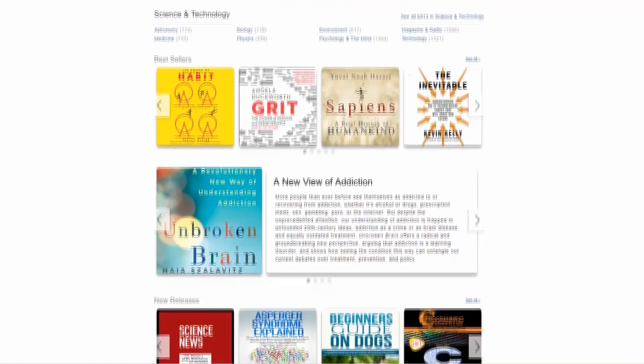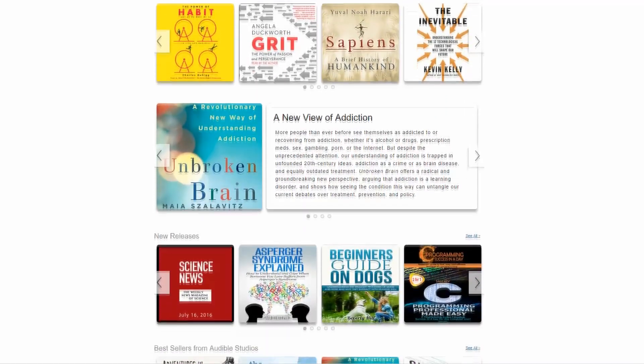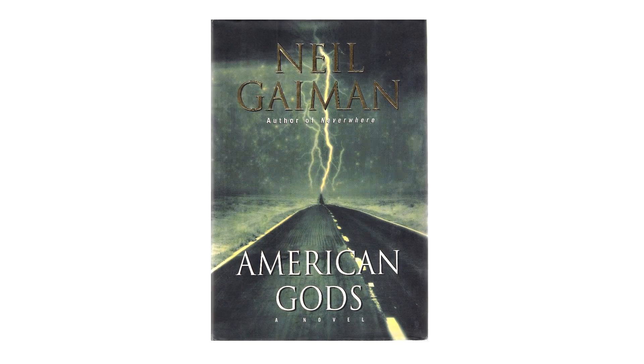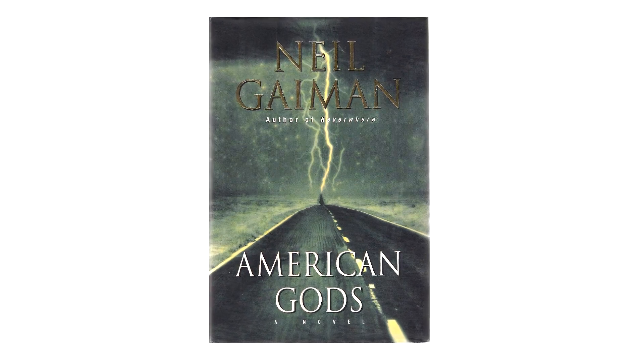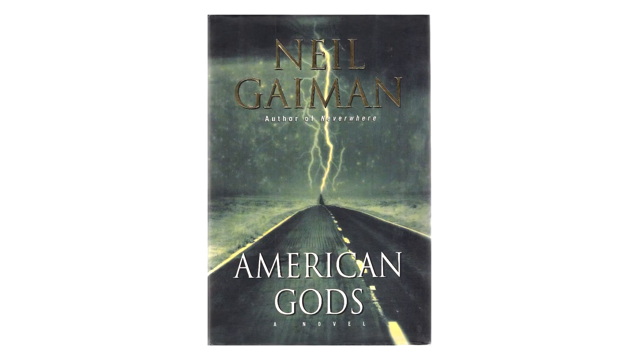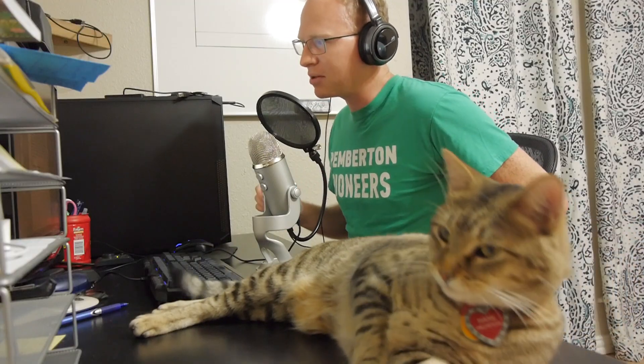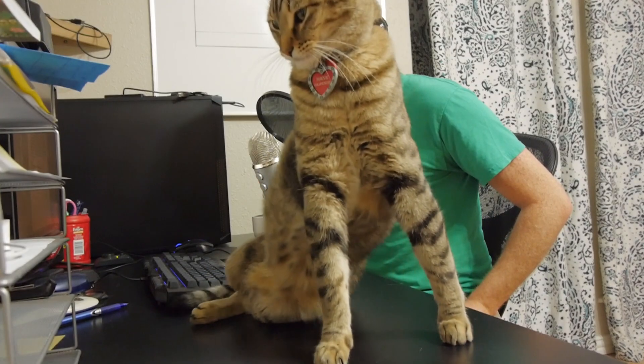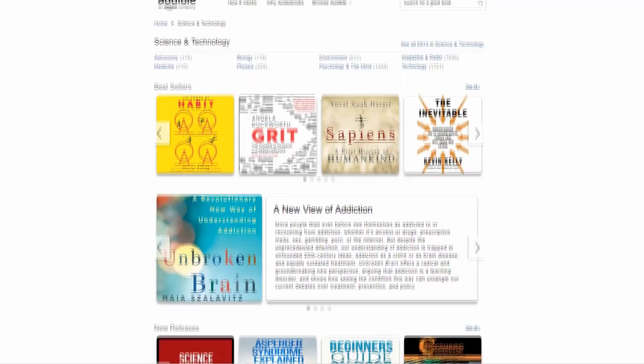Audible's got over 250,000 titles, so I know I'm never going to have a hard time finding something new. I usually switch off between fiction and nonfiction. Right now I'm listening to American Gods by Neil Gaiman. It's an awesome story about modern mythology, and this is a full-cast audiobook with different voice actors for each character.